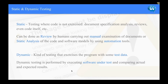Static and dynamic testing — the differences between them. Static testing is where the code is not executed — for example, document specification analysis, reviews, and even code itself can be reviewed by humans through manual examination of documents or static analysis of code and software models using automation tools. Dynamic testing exercises the program with some test data — it is performed by executing the software under test and comparing actual results with expected results.